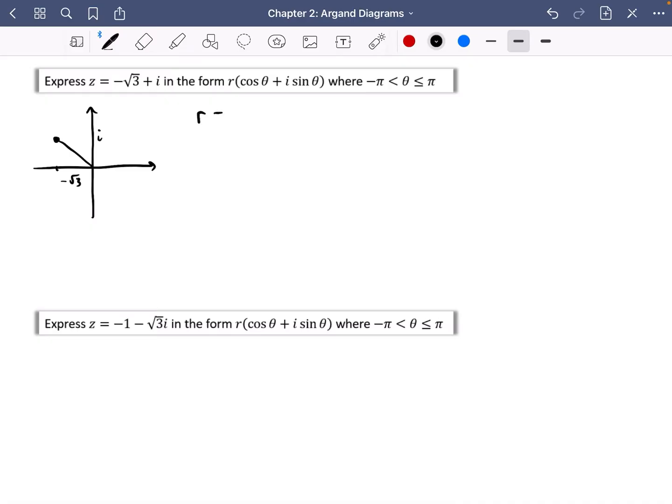So r is going to be the square root of root three squared, which is obviously just three, and one squared, which is just one. So that's just root four, which is two.